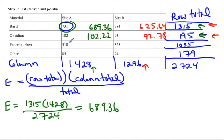Then we'll go to the 510. The 510 is in the row of 1,035, and the column of 1,428. Multiply those two numbers together, divide by the grand total, and you end up with 542.58. Then we'll do the same thing with the 525. The 525 is in the row with 1,035, and the column with 1,296. Multiply those two numbers together, divide by the grand total, and you end up with 492.42.